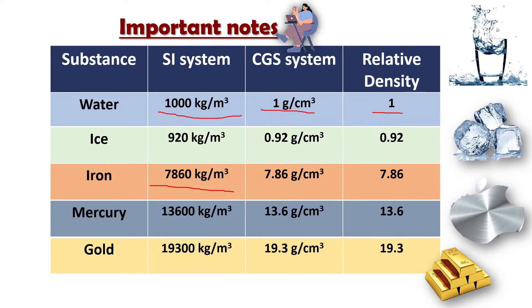Gold has a density of 19,300 kg per meter cube. In the CGS system it is 19.3 gram per centimeter cube, and the relative density is 19.3. This is how the values relate through the formula.